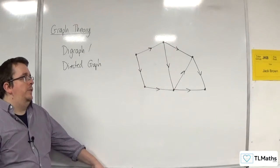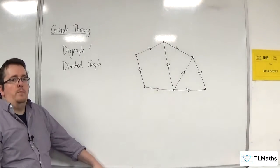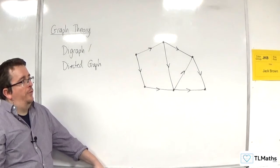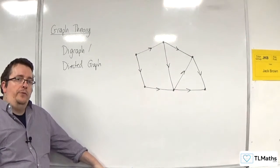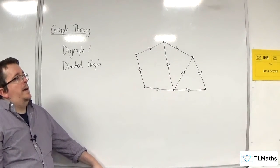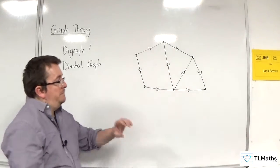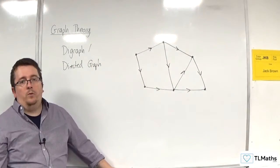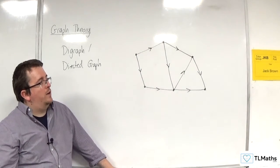A digraph doesn't have to have all of them labelled with arrows. But when we get on to things like network flows and critical path analysis, for that matter, we will have arrows on all of them, all of the edges, as we work our way through.